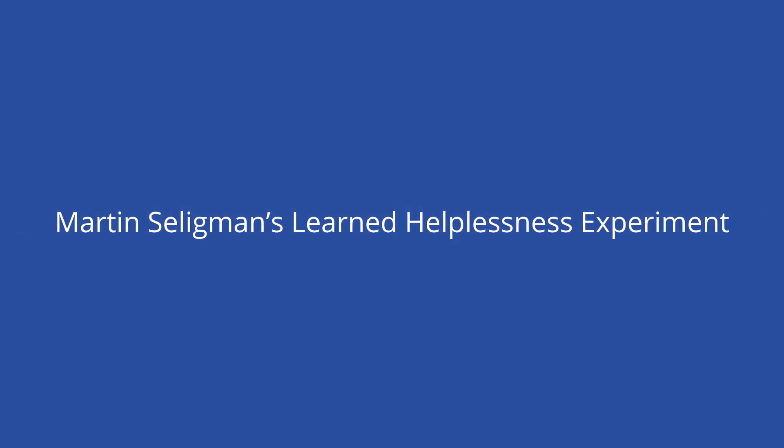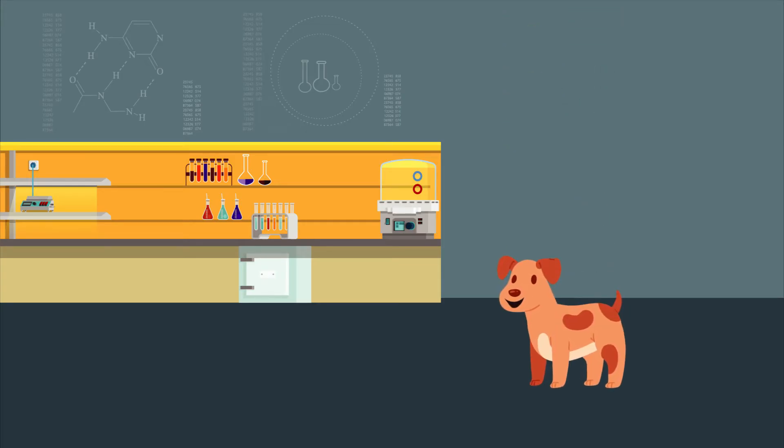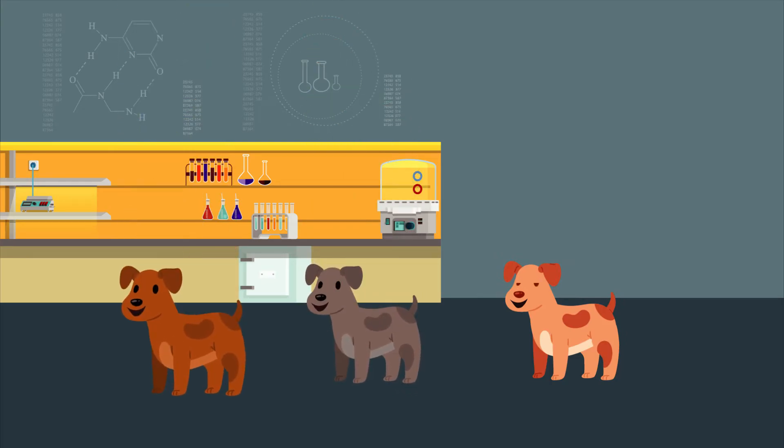This kind of conditioning was famously studied in Seligman's Learned Helplessness Experiment. The notable part of the experiment was conducted in 1967 at the University of Pennsylvania by Martin Seligman and his colleagues. However, it only came about because two years prior, the researchers had been experimenting with classical conditioning, which is the process by which an animal or human comes to associate one stimulus with another.